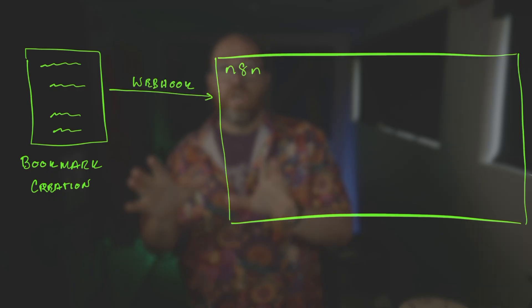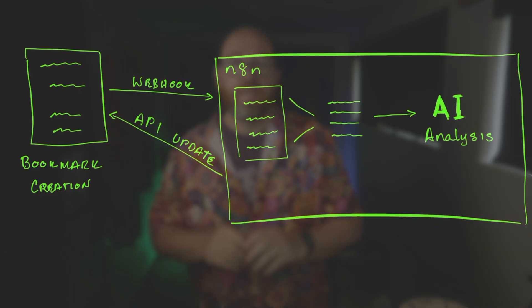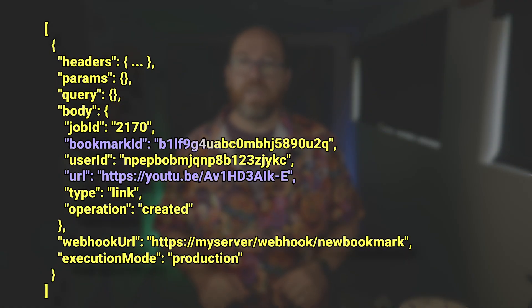This workflow demonstrates the full power of combining webhooks, custom AI processing, and API updates. The complete workflow looks like this: bookmark creation triggers a webhook notification to N8N, content extraction from the web page, custom AI analysis, and finally an API update back to KaraKeep. Each step builds on the previous one, and by the end you'll have a fully automated system that turns your bookmarks into searchable, analyzed knowledge. Let's start with step one — the webhook receives the article bookmark from KaraKeep. When you bookmark a web article, KaraKeep fires the webhook immediately. The payload includes the article URL and a unique bookmark ID that you'll need for updating later.